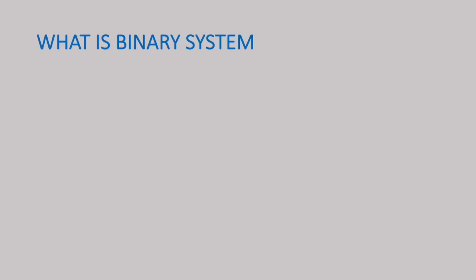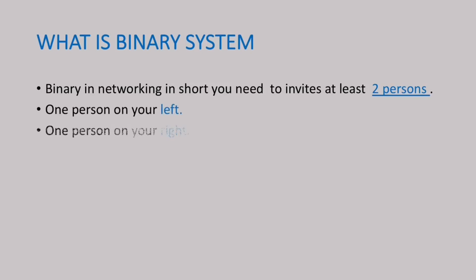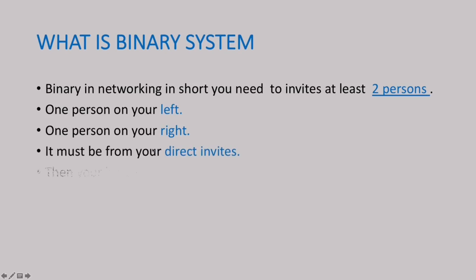What is the binary system? In binary networking, you need to invite at least two persons — one person on your left and one person on your right. It must be from your direct invites. Then your binary system will start. Let's see how it works.